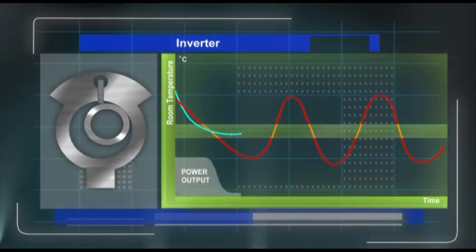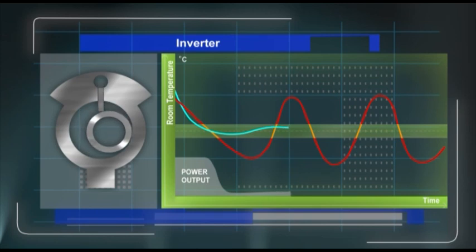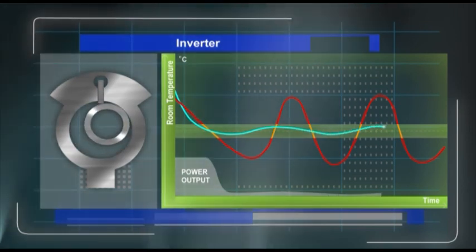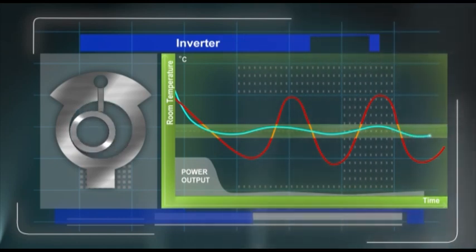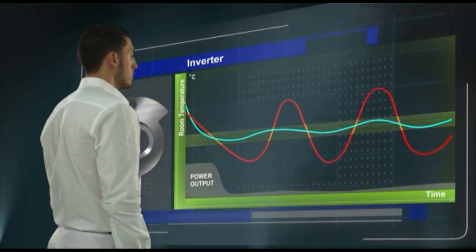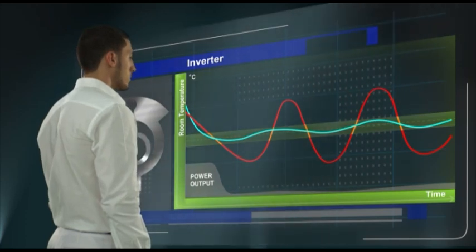With inverter air conditioners, however, the inverter's ability to regulate the speed of the compressor works to maintain a constant room temperature. This is how inverter air conditioners can deliver unprecedented levels of indoor comfort.